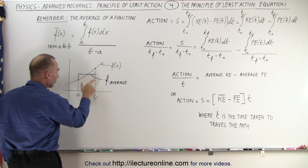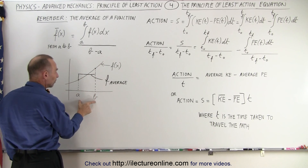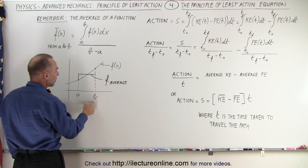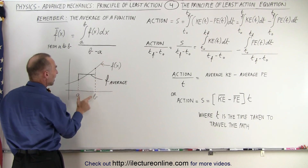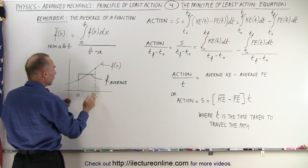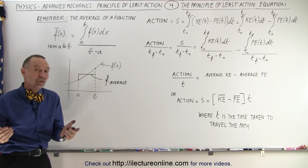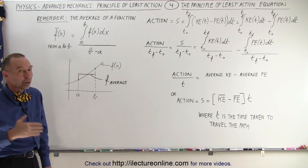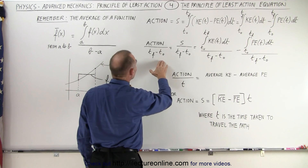If we then take the area underneath the function and divide it by the distance between A and B — in other words, divide it by B minus A — then we take the area, divide it by the width, and we get the average height, which represents the average function. We're going to do the same for our action equation.